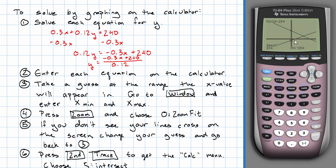Notice I have a little flashing x thingy here. I'm going to move that over to be kind of close to where the lines cross. And now I hit enter, and it says intersection x equals 500, y equals 750.